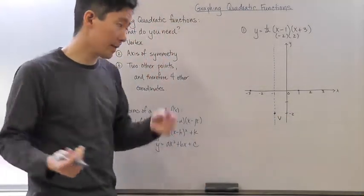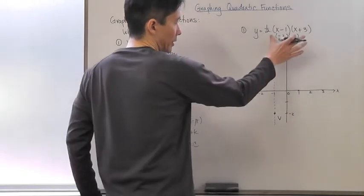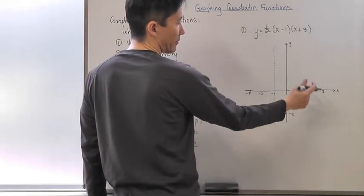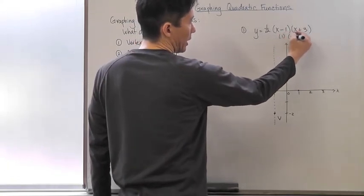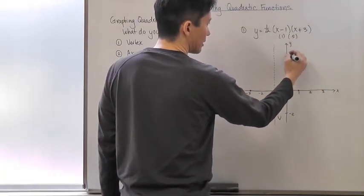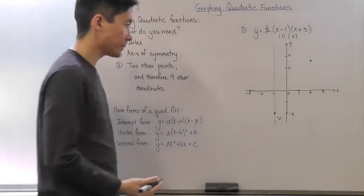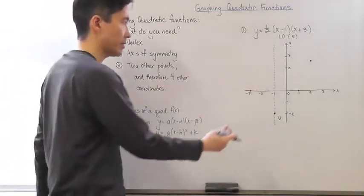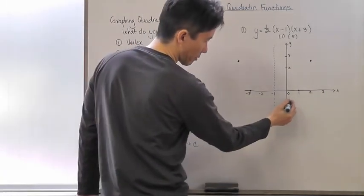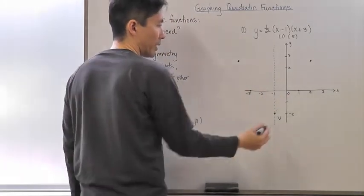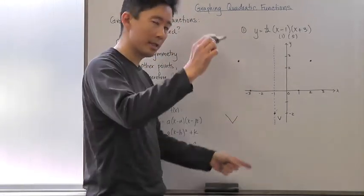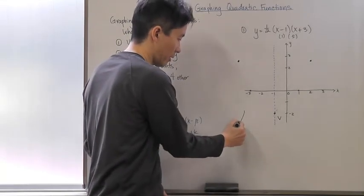Now I know this graph is opening upward. To find one more point, let's try x equals two. Substituting gives one half times one times five, which is two and a half. So the point (2, 2.5) is on the graph. Using the axis of symmetry, there's a corresponding point on the other side. Now I can join those coordinates and come up with a smooth parabola — make sure it's smooth and rounded, not pointy.